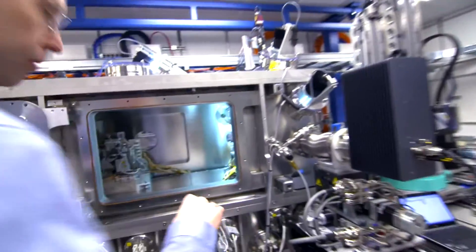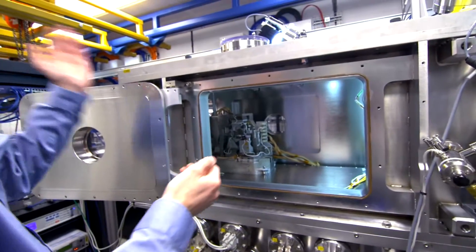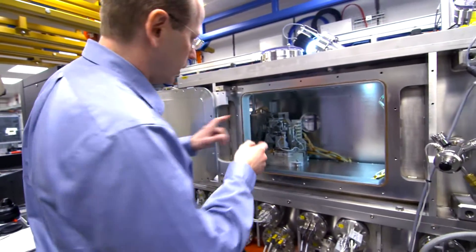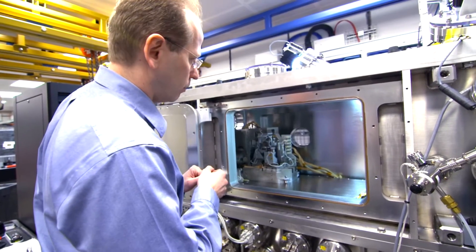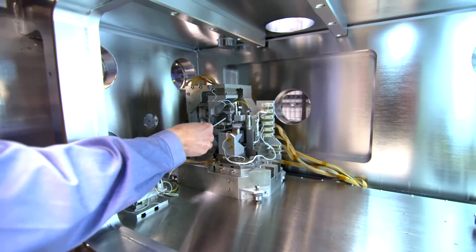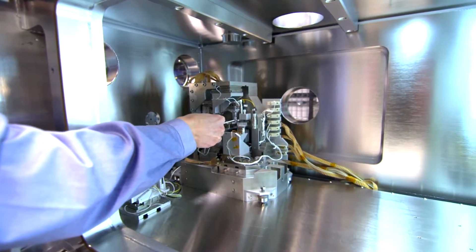Then the beam comes this way and hits the sample. And this is the MLL module of the microscope. This is the sample area, so we mount the sample right here.